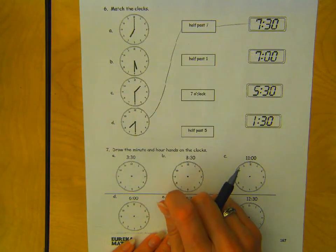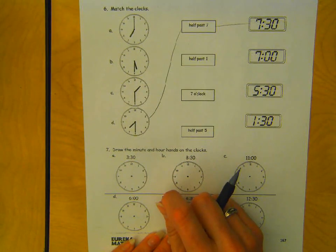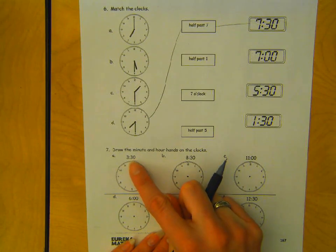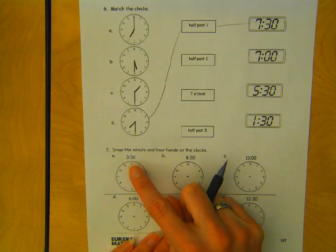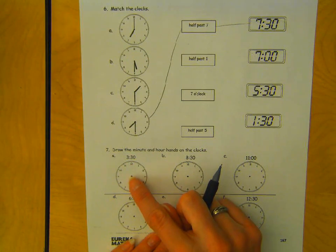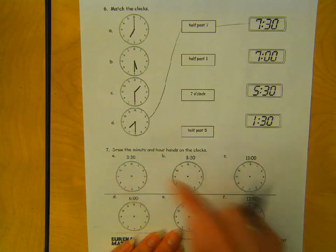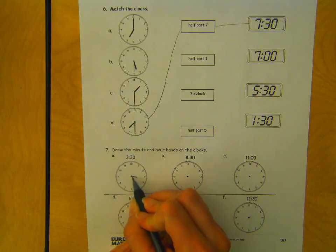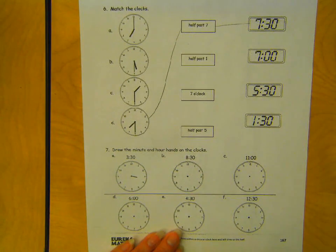I'm going to do the hour hand first. It's the short hand. If it's 3:30, that means it's half past 3, which means it's going to be between the 3 and the 4 o'clock hours. So I'm going to do my short hand pointing between the 3 and the 4 because it's 3:30 or half past 3.